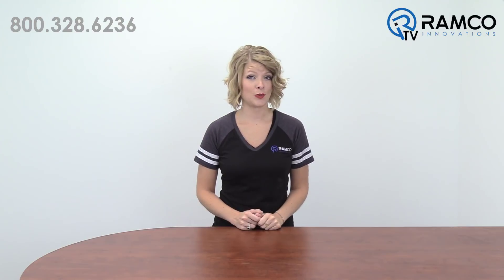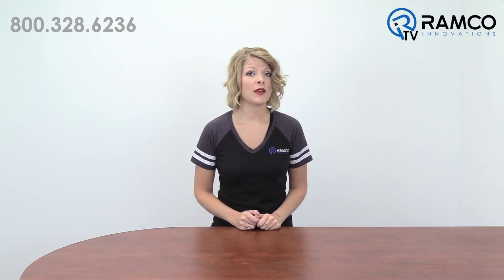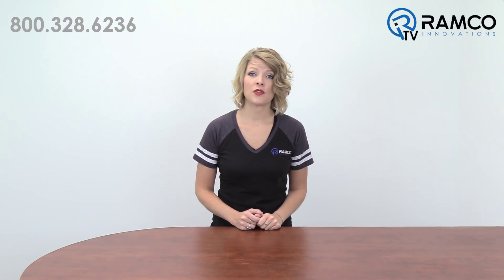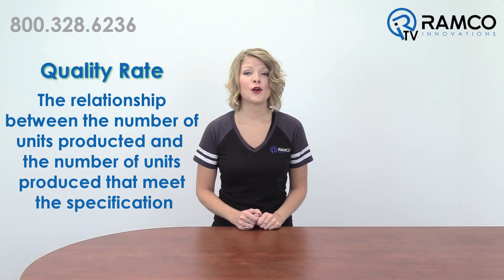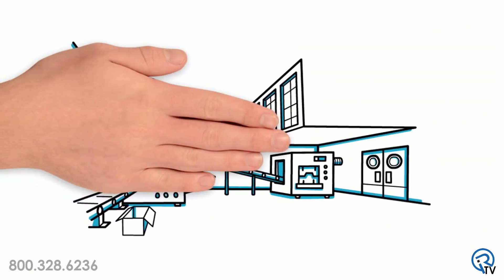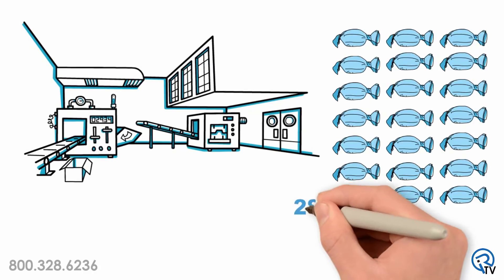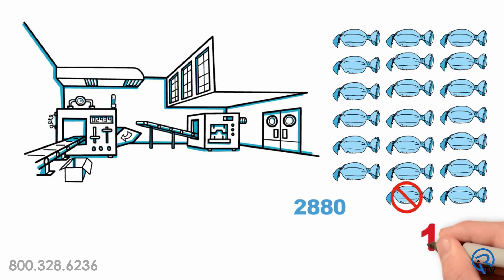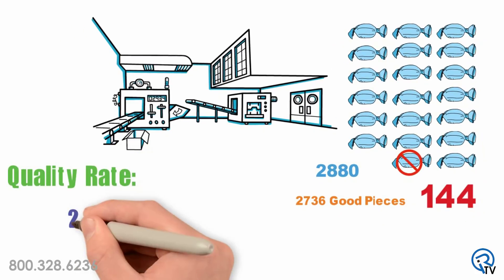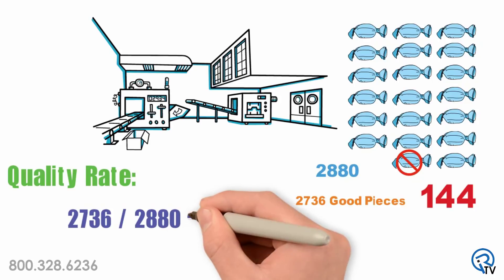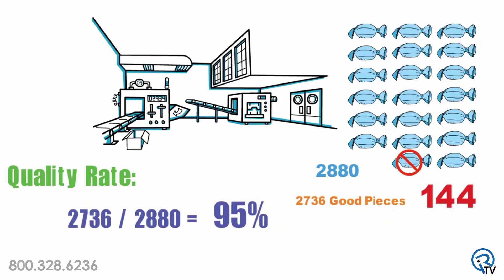When we know how long the machine ran and how fast it ran, the next question is quality. Once we have measured the time and speed losses, we focus our attention on the quality of the products being made. The relationship between the number of units produced and the number of units that meet the specifications is called the quality rate. For example, during the production time, 2,880 pieces were produced, but 144 of those pieces were rejected, giving us a total of 2,736 good pieces. To calculate the quality rate, we take 2,736 divided by 2,880, which gives us 95%.